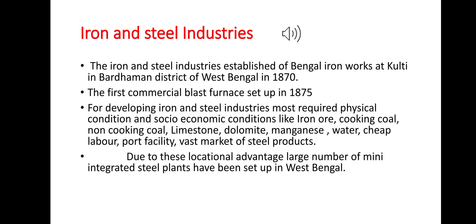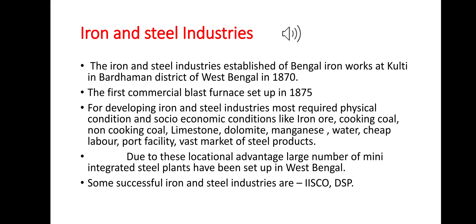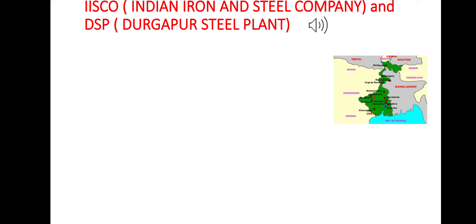Due to these locational advantages, a large number of mini integrated steel plants have been set up in West Bengal. Some successful iron and steel industries are ISCO and DSP. We will now discuss the Indian Iron and Steel Company (ISCO) and Durgapur Steel Plant (DSP).